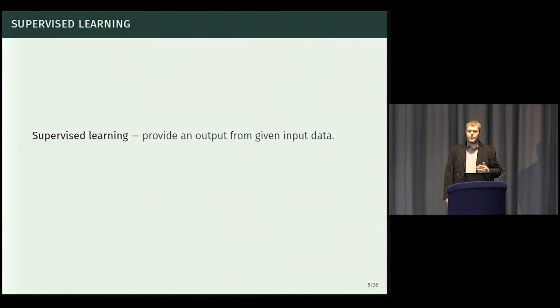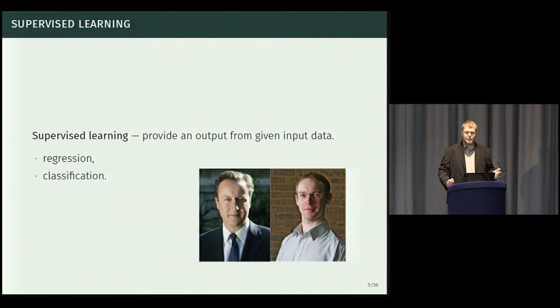So first of all, supervised learning is what we usually think of when we say machine learning. It tries to solve a problem of finding an output given some input data. And that subdivides further into two categories. Regression, where we have to give an output that lies on some continuous spectrum. For example, how much would an apartment cost if it's placed here, and has that many bedrooms, and is that big. On the other hand, we have classification algorithms that have some predefined finite set of labels, and we have to pick one of them for each of the data points. For example, does that picture show a face of a person? Or is that person a human? Or maybe an alien lizard sent down to earth to destroy humanity as we know it?